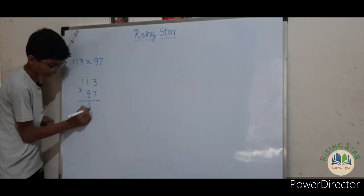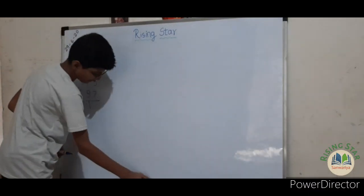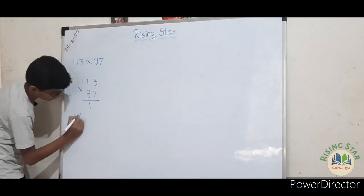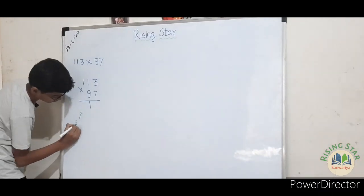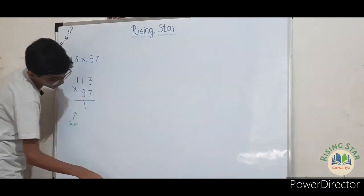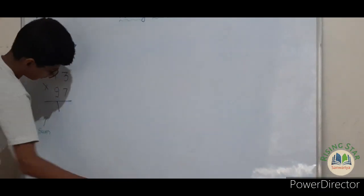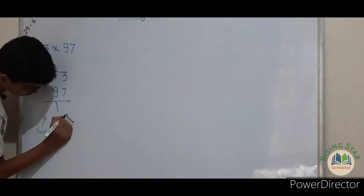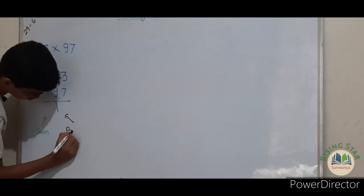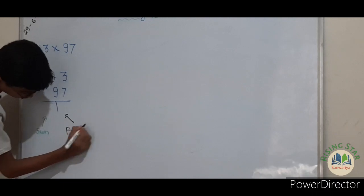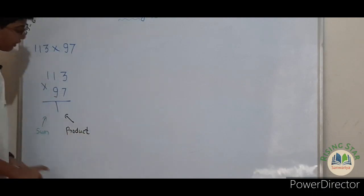First of all, draw a line, then write here 'sum', then write here 'product'. Now let's find the base. We have to follow the same steps but something is different. Next is deviation, then sum, and last is product.